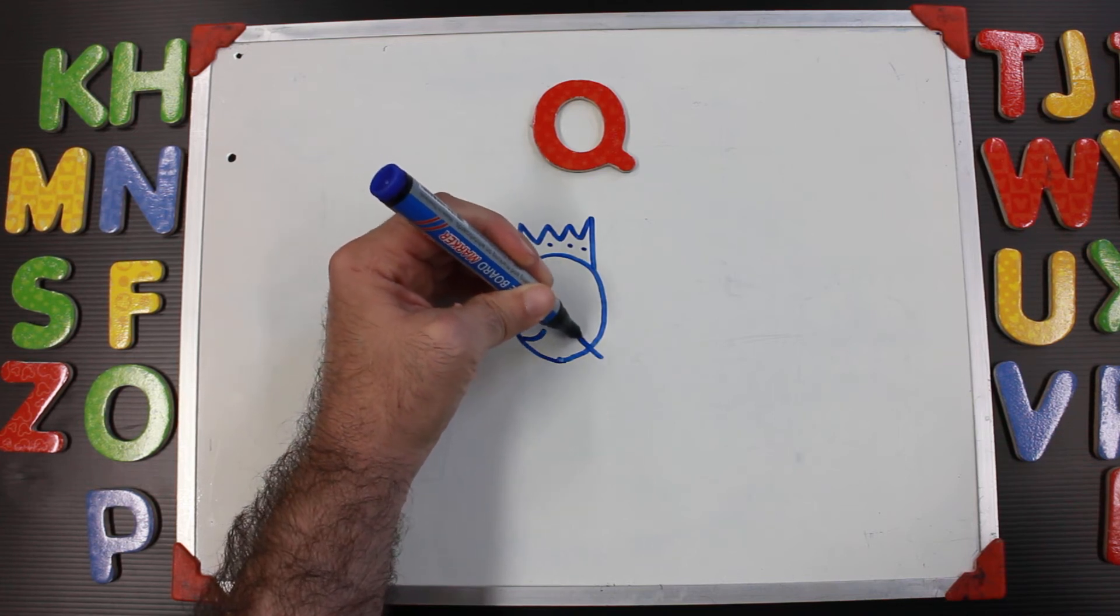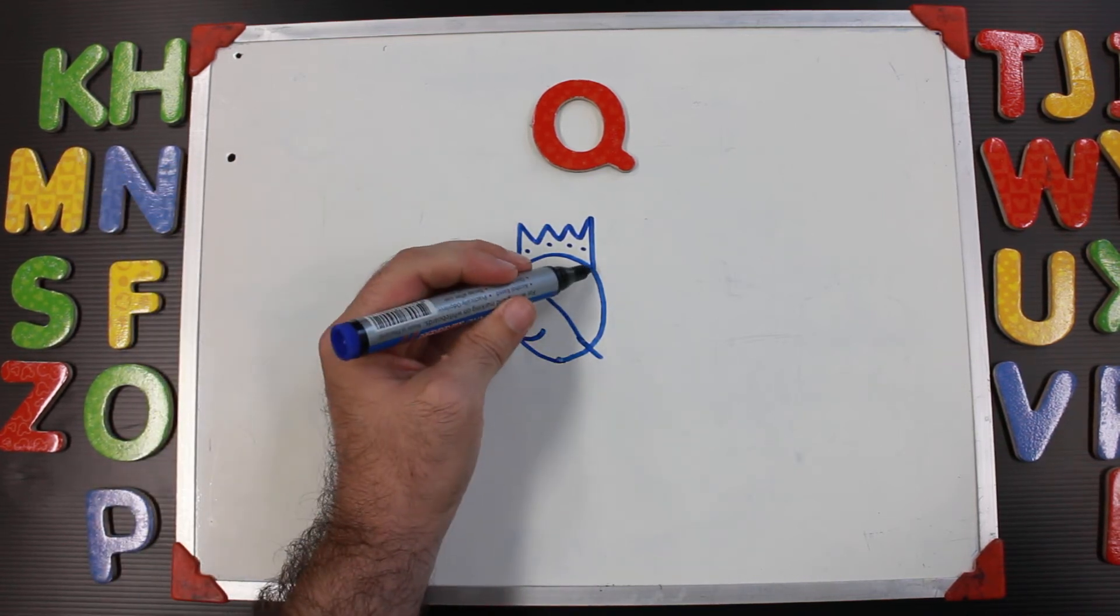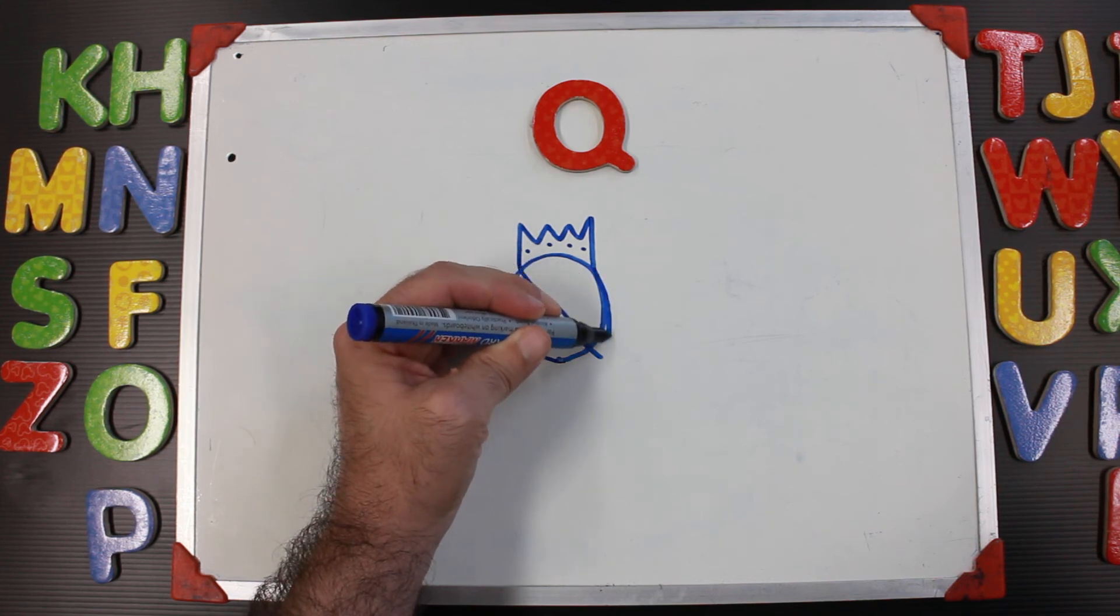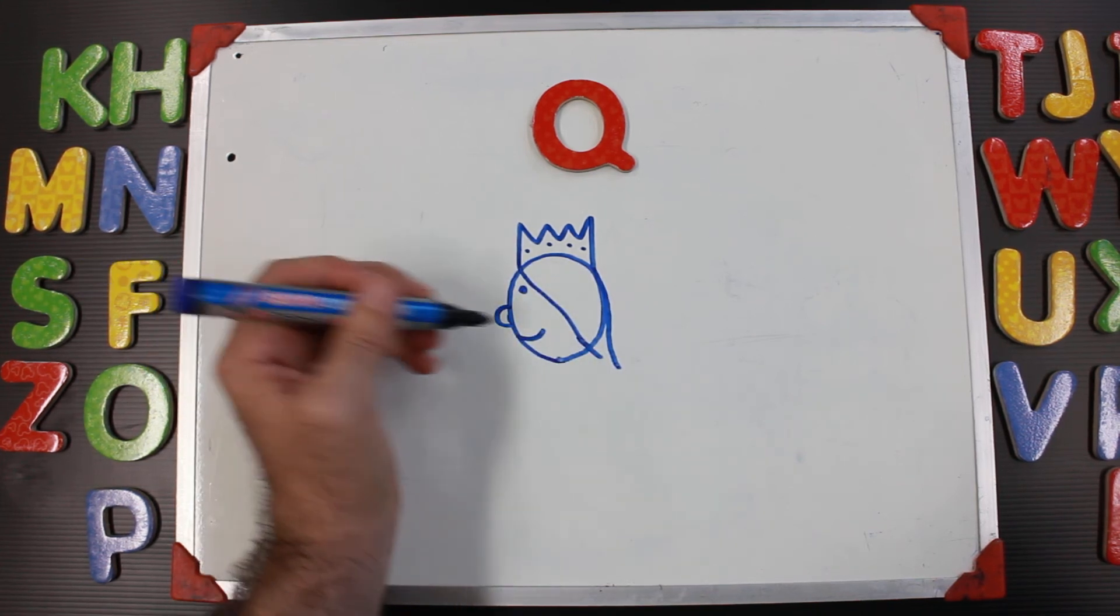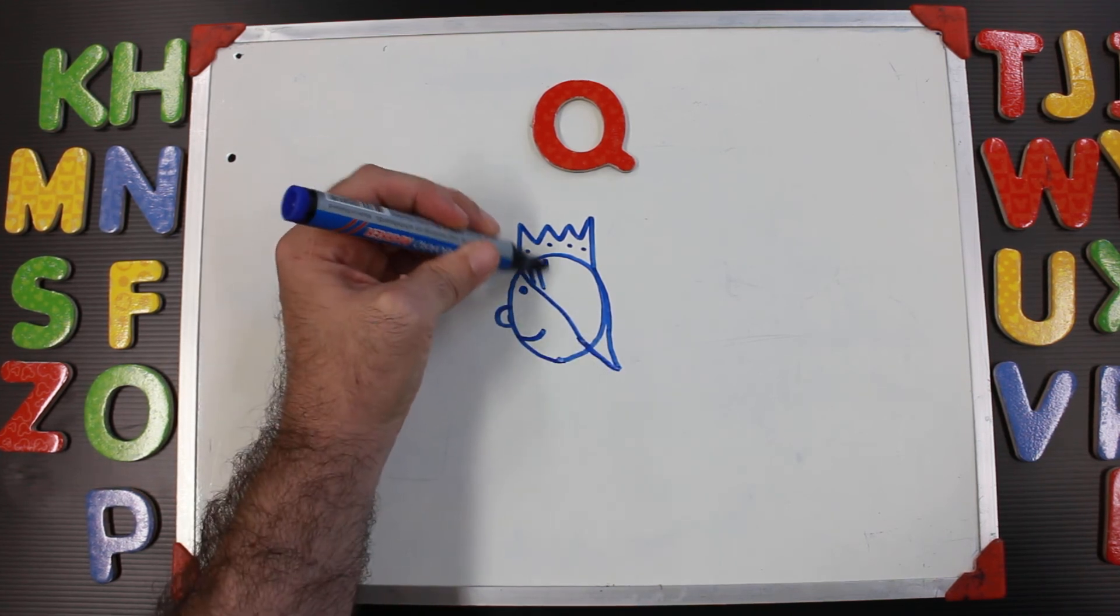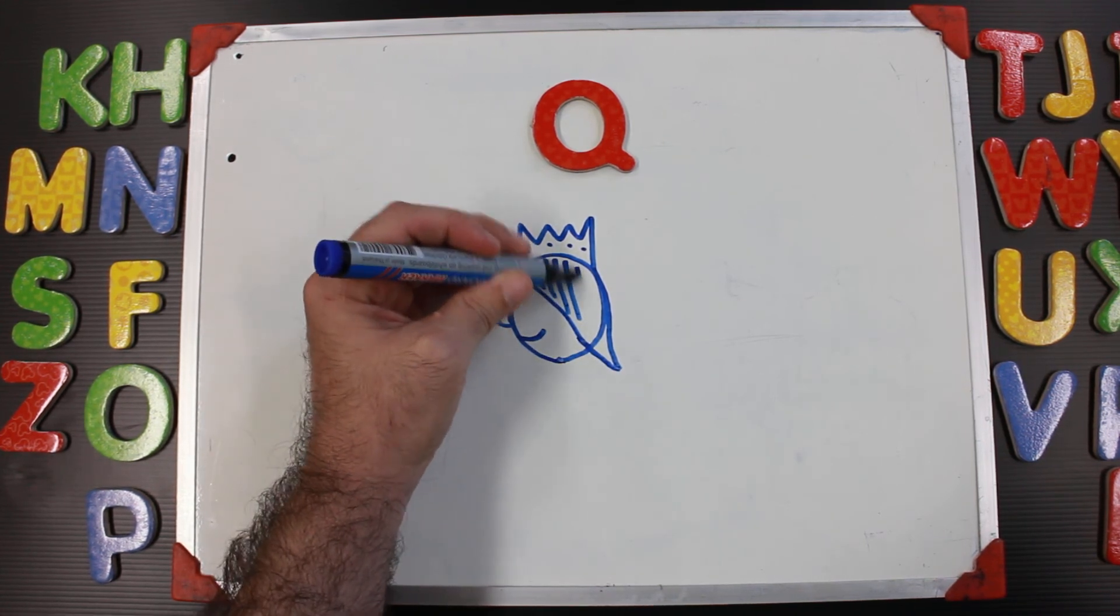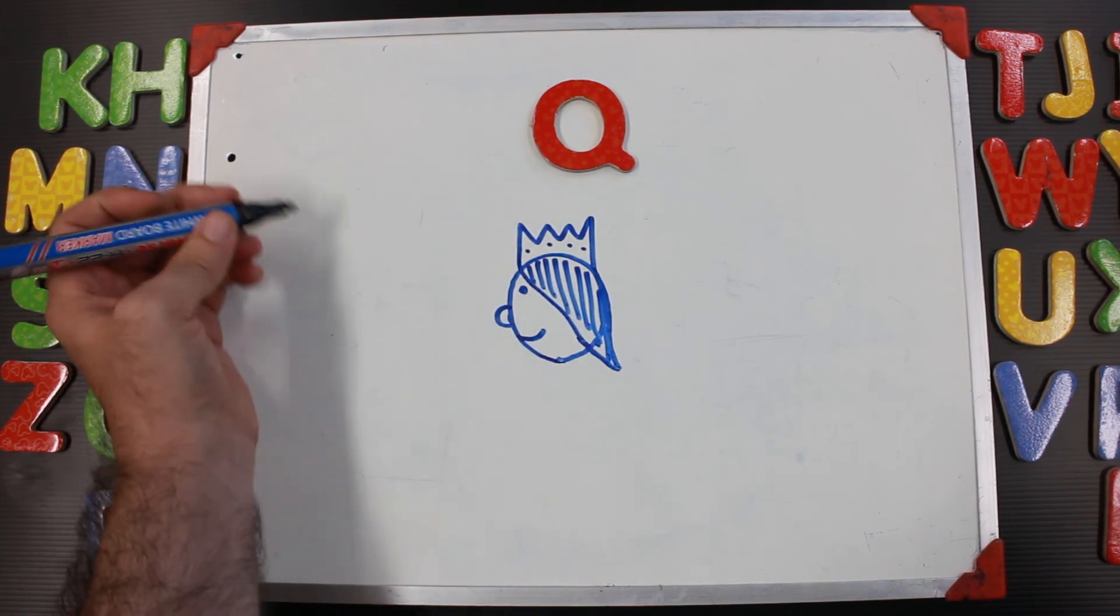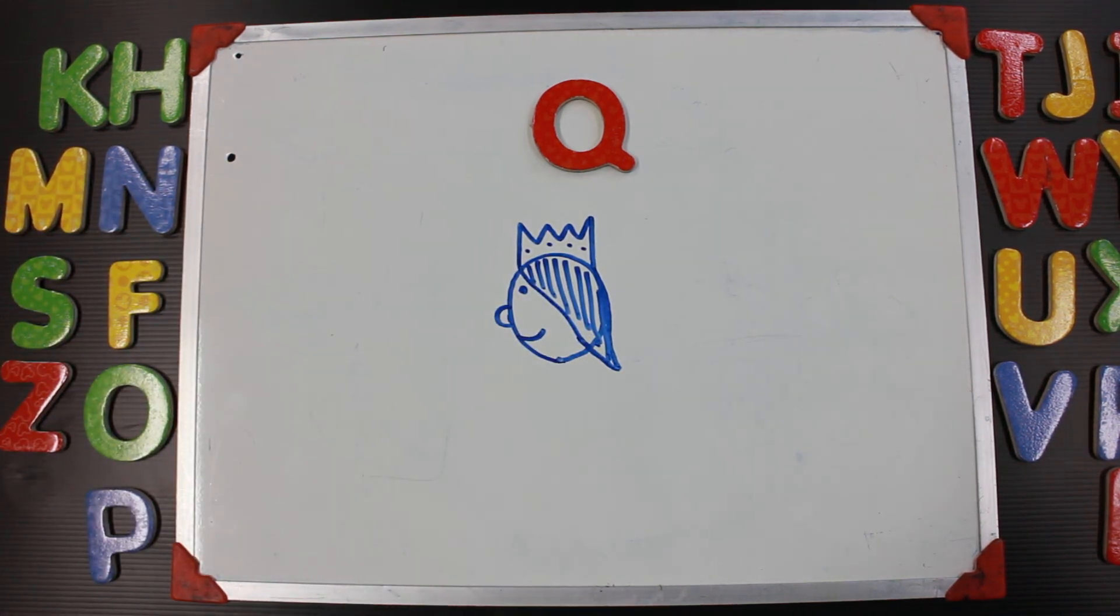will connect our line to there. We will then start over here and then connect our line to the bottom there. Connect these two little lines here. Color your hair black or brown, any color you want. Okay, and that is our drawing for letter Q.